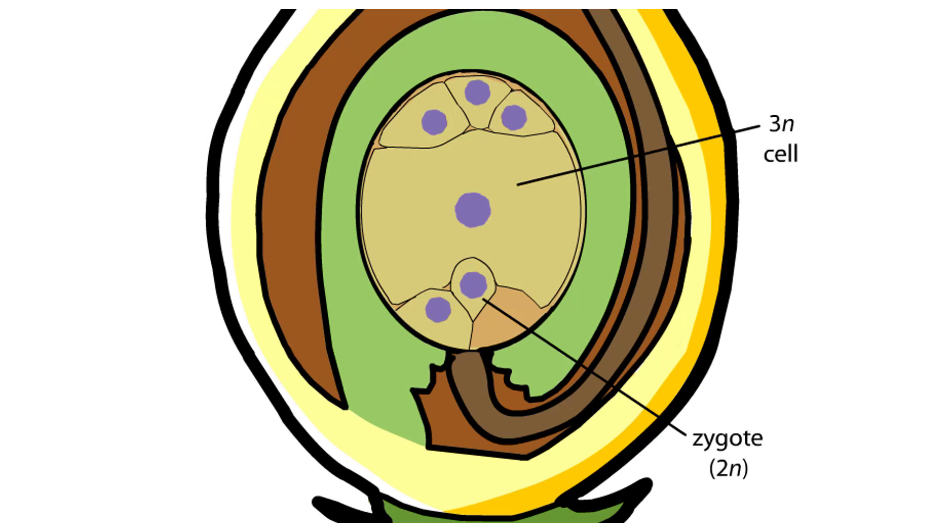As the zygote develops into an embryo, the triploid cell develops into the endosperm, which serves as the embryo's food supply.